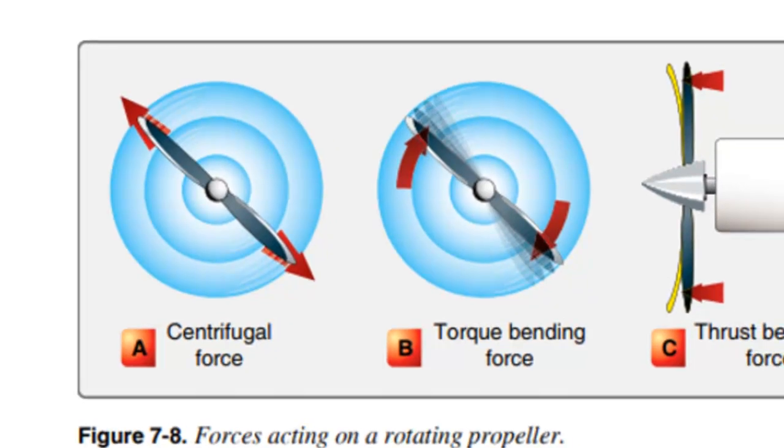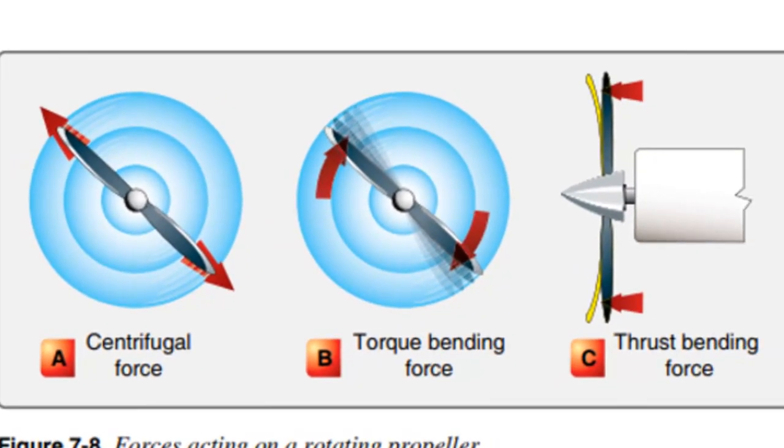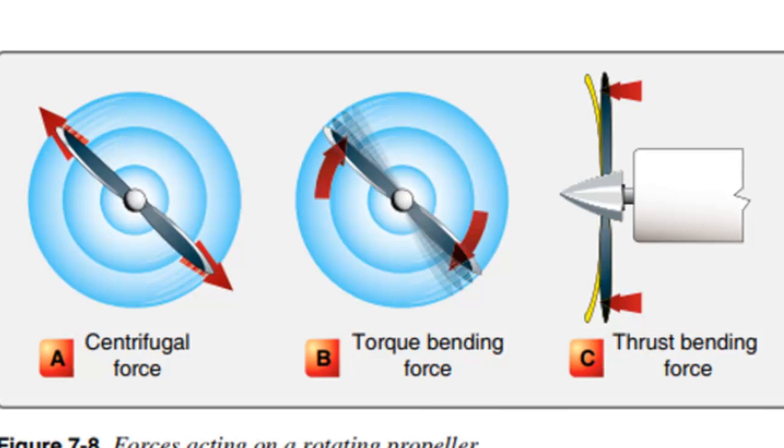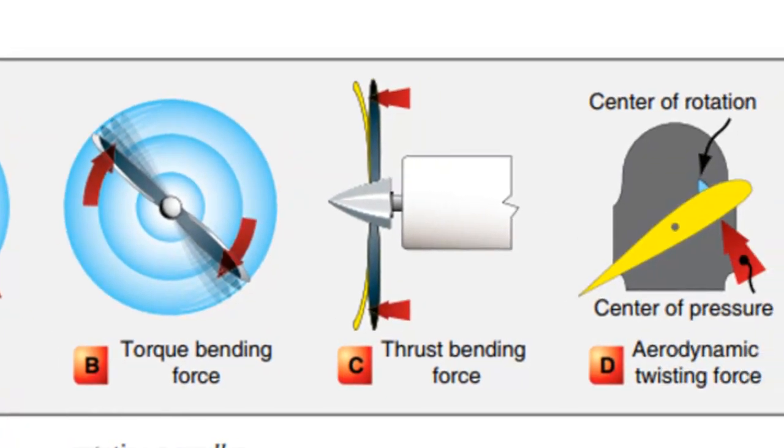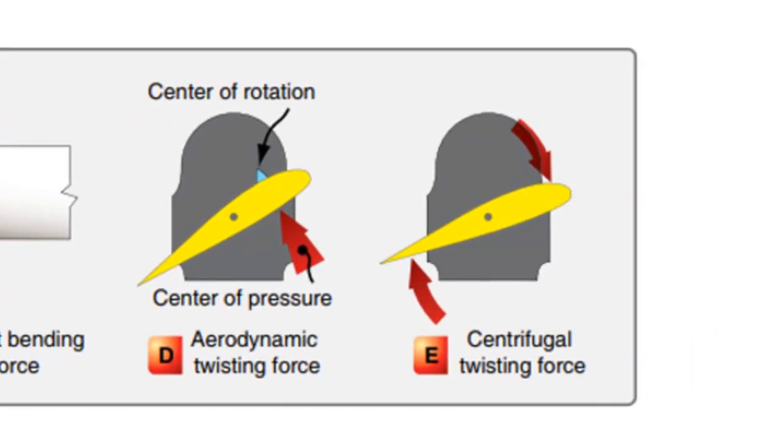There's torque bending force, where the power strokes of the engine are pulling the blade along, and so it's vibrating fore and aft. There's thrust bending forces, pulling the blades forward. And also drag forces. If you've got the engine idled down to the point where the relative airflow is turning the propeller rather than the engine, then the blades would be pushed back. There's aerodynamic twisting forces. Any lifting airfoil is going to tend to twist down. And then there's also centrifugal twisting forces on it.